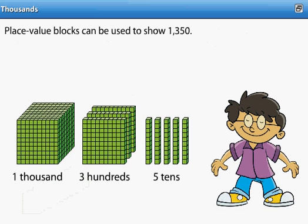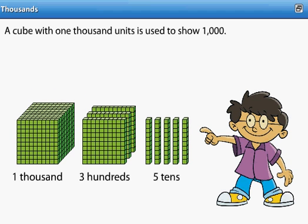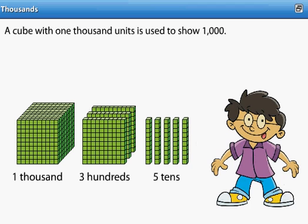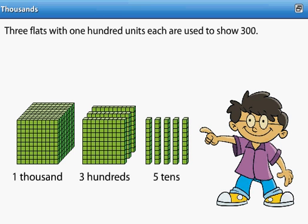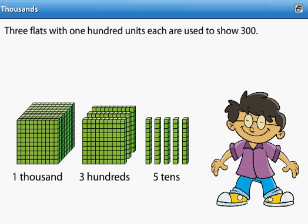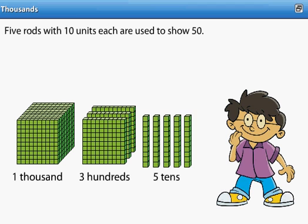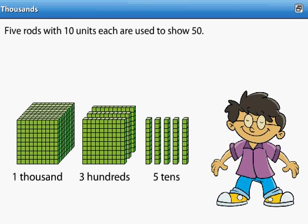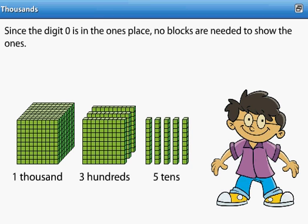Place value blocks can be used to show 1,350. A cube with 1,000 units is used to show 1,000. Three flats with 100 units each are used to show 300. Five rods with 10 units each are used to show 50. Since the digit 0 is in the ones place, no blocks are needed to show the ones.